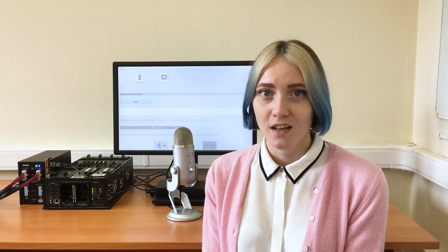First, let me tell you what natural language processing is. Natural language processing, or NLP, is a kind of artificial intelligence that transforms unstructured text into a format that a machine can understand and take some action based on it. It's a broad area that includes a variety of different approaches and applications.